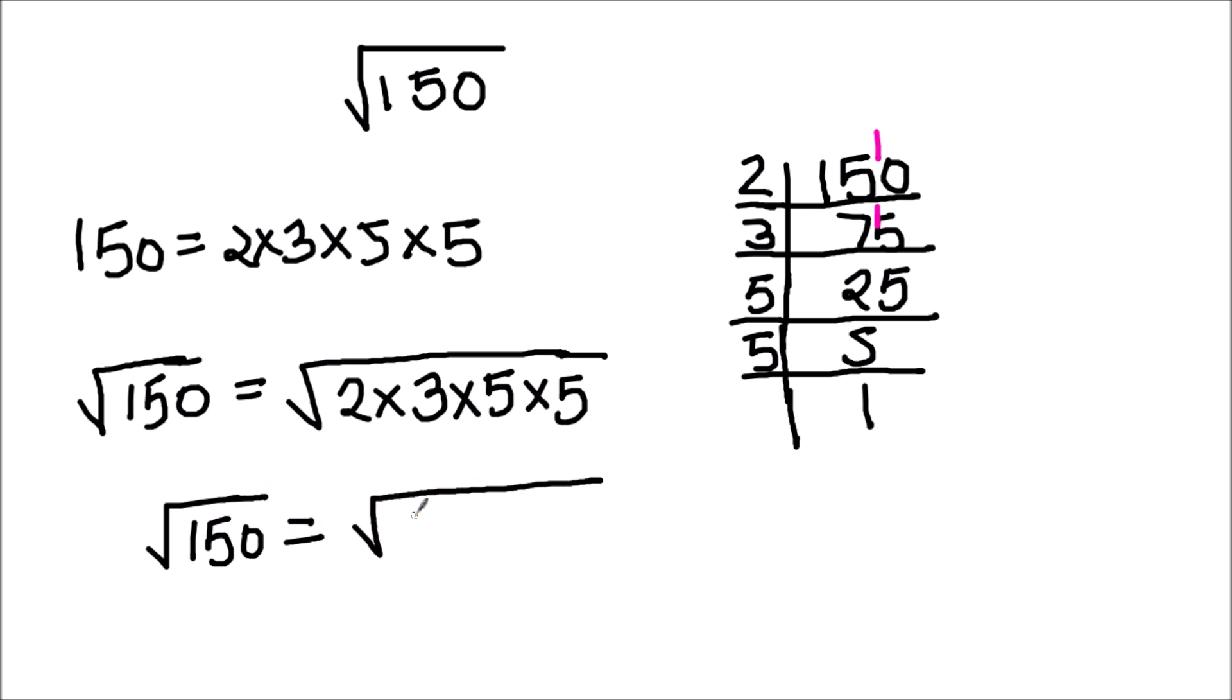In exponents form, we can write it as 2 times 3 times 5 square. And as there is a square under the square root sign, this 5 square gets cancelled with the square root sign and this 5 gets out of the square root sign.